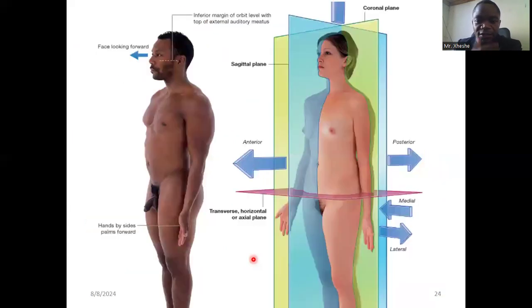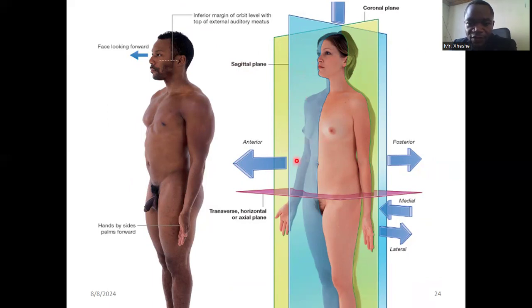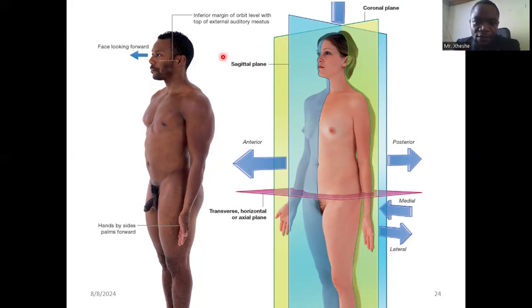Now let's look at some planes. There are three important planes that divide the body in half when a person is in anatomical position. The first is the sagittal or median plane, shown in blue here. The sagittal or median plane divides the body into two halves — a left and right half. It cuts through the nose, chest at the sternum, umbilicus, and symphysis pubis in the pelvis. It is called the median plane because it runs through the midline.